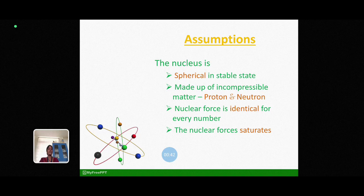We know the nucleus is made up of proton and neutron and these proton and neutron are incompressible matter. And the nuclear force is the strongest force in the nature that exists between the nucleons and is identical for all the combinations of protons and neutrons.